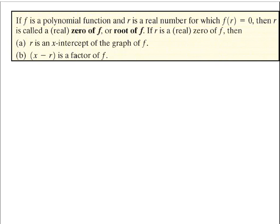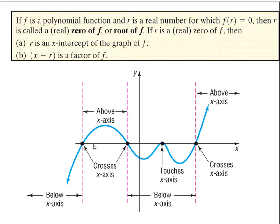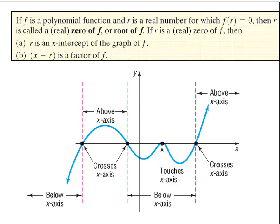Visually, polynomial graphs can exhibit different behaviors at x-intercepts. The graph could cross through the x-intercept — going from negative to positive y-values or vice versa. Or the graph could bounce off (touch) the x-intercept — coming down to the zero and then bouncing back in the same direction. These different behaviors at zeros are a key part of our analysis.